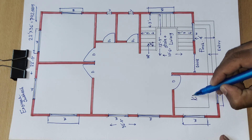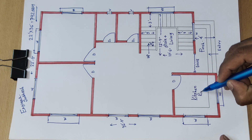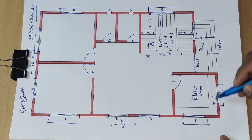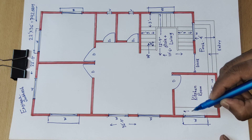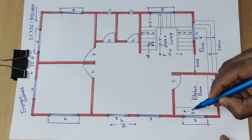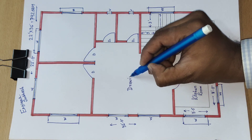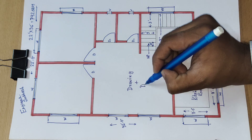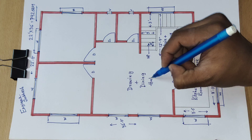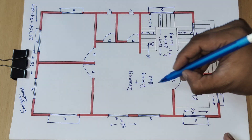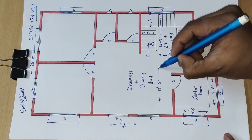The kitchen area dimensions are 8 feet 0 inch by 8 feet 0 inch. The drawing room plus dining hall total distance is 13 feet 2 inch.